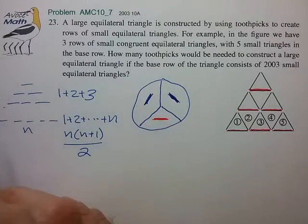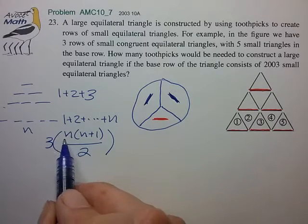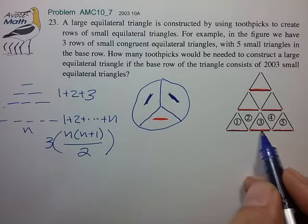And so that's all the toothpicks in the horizontal configuration and if we wanted to compute all the toothpicks we'd have to multiply this number by 3. So it really comes down to what is n? What are the total number of toothpicks at the base?